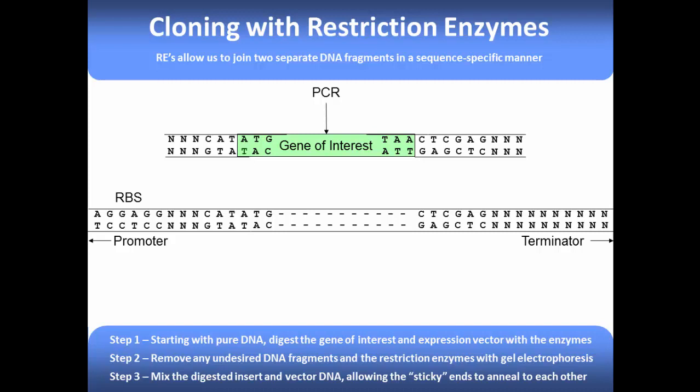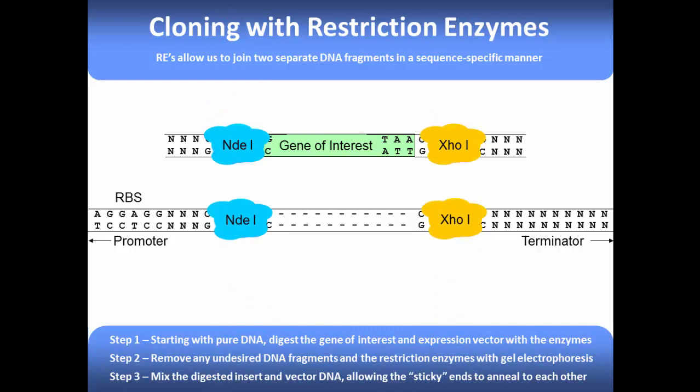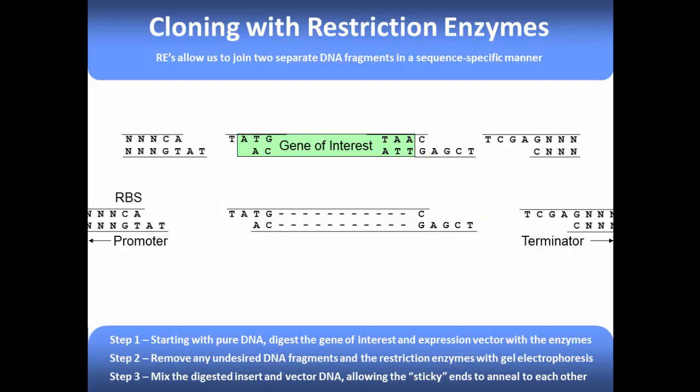In today's reaction, we'll be digesting our gene of interest, which is a PCR product, and our expression plasmid, which has an old gene we're looking to replace. Both the PCR product and the plasmid have identical restriction sites — upstream of the gene of interest is the restriction site CATATG, which is palindromic, and downstream we have CTCGAG. It's very important that we have the same pair of restriction enzymes in both the PCR product and the plasmid. In this example we're using NDE1 and XO1.